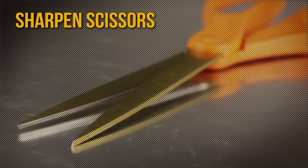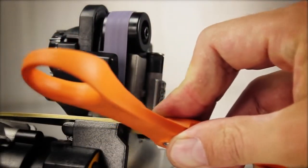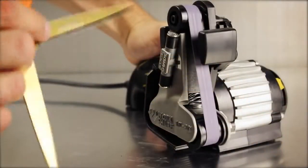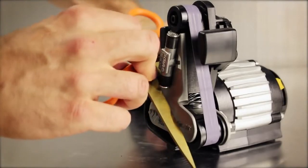To sharpen scissors, use the finest belt and place the scissors into the scissor guide. Power on and pull the scissor blade through. Repeat for two to three times per side. Do not sharpen the flat side of the scissors.